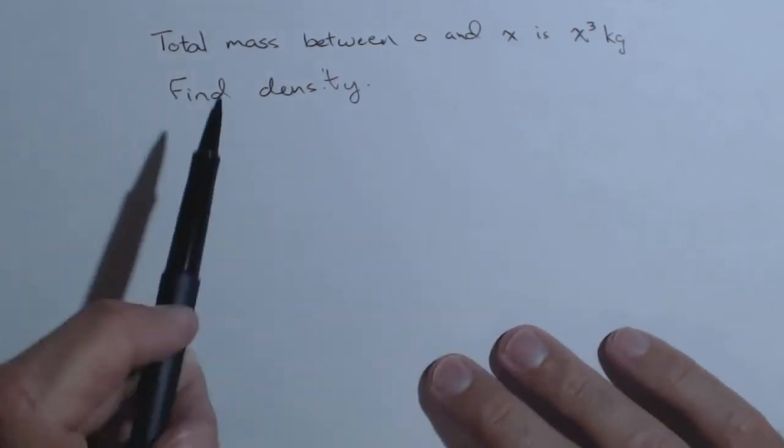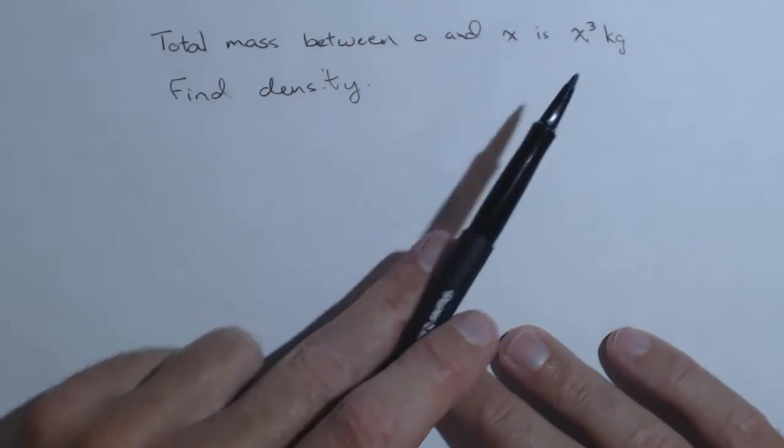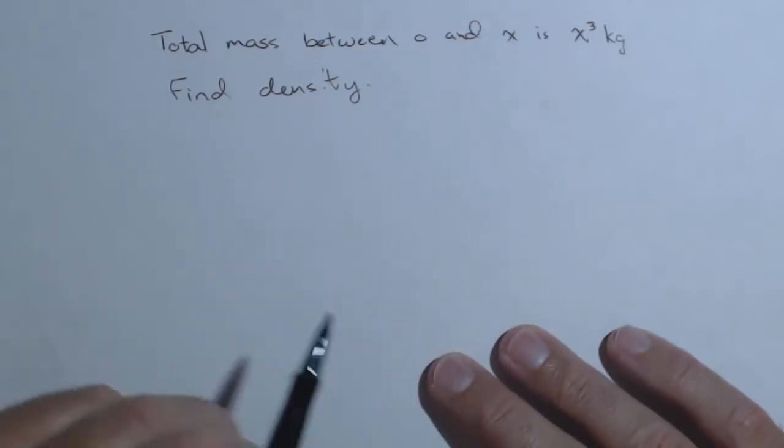We're going to work in reversing this problem. The total mass between 0 and x is x cubed kilograms, and we're going to find the density as a function of x.